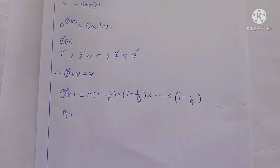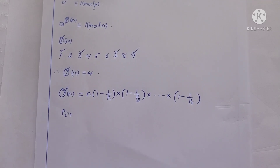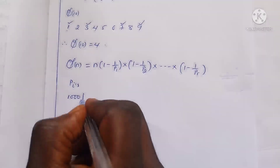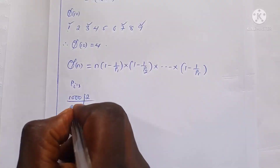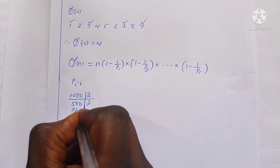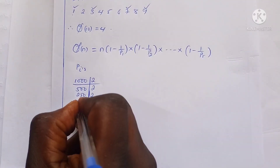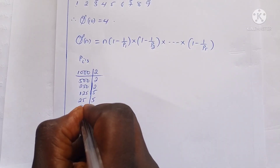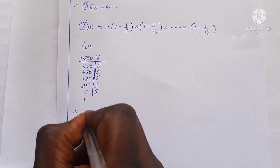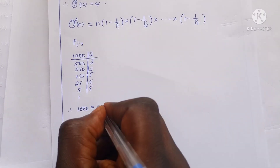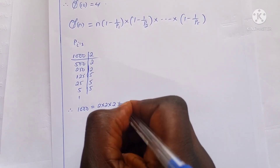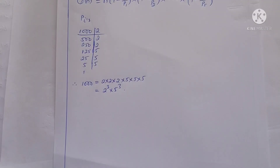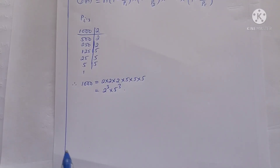To find phi of 1,000, we first prime factorize 1,000. The smallest prime that divides 1,000 is 2. 2 divides 1,000 giving 500, then 500 giving 250, then 250 giving 125. Then 5 divides 125 giving 25, 5 divides 25 giving 5, and 5 divides 5 giving 1. Therefore, 1,000 equals 2 cubed times 5 cubed, and the only two prime factors of 1,000 are 2 and 5.